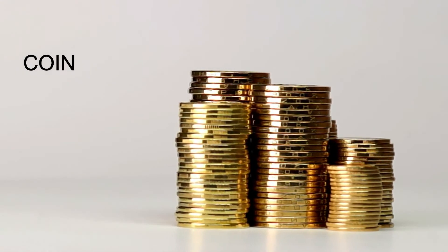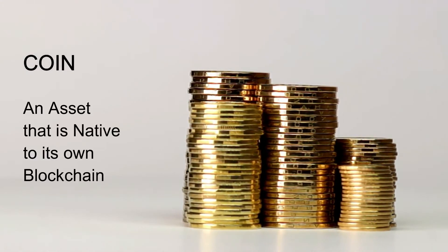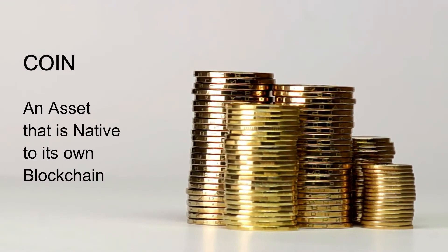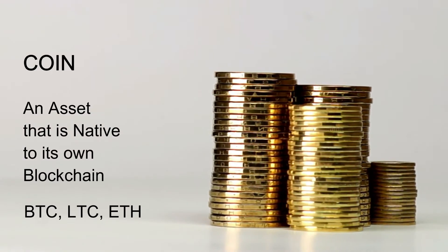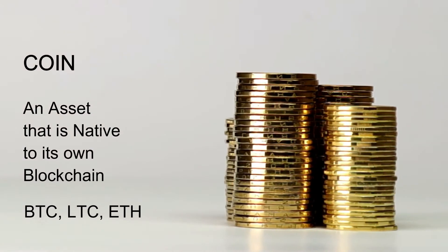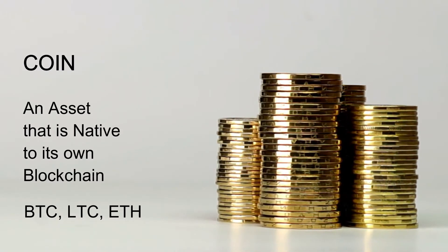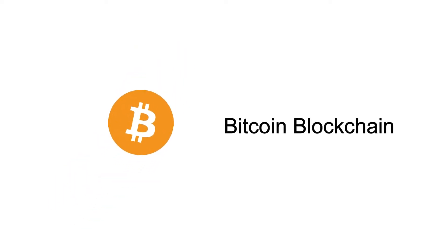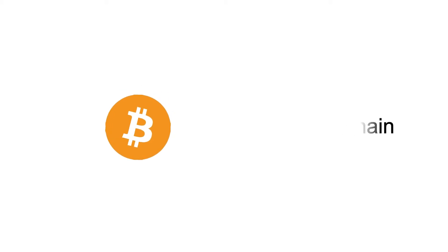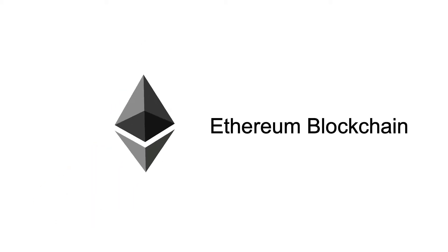The definition of a digital coin is an asset that is native to its own blockchain. Think about Bitcoin, Litecoin, or Ether — each of these coins exists on their own blockchain. To make this a little clearer: Bitcoin operates and functions on the Bitcoin blockchain, and Ether operates and functions on the Ethereum blockchain.